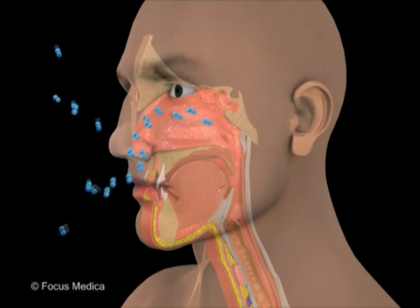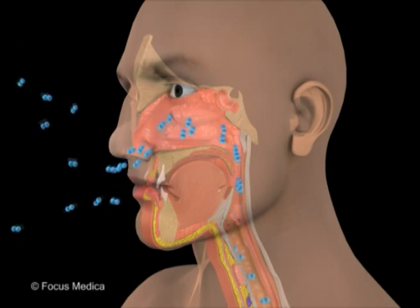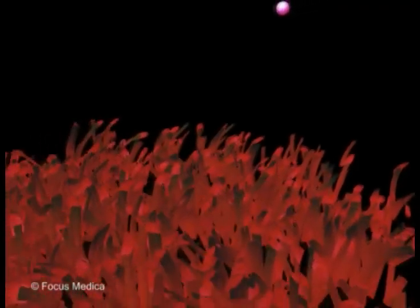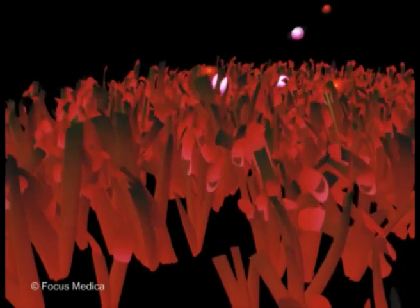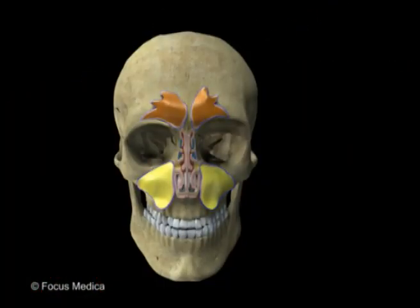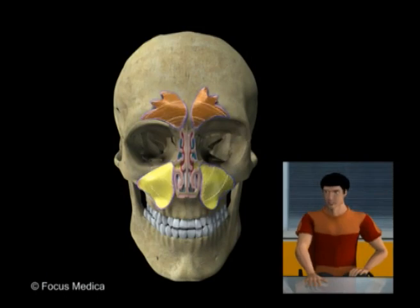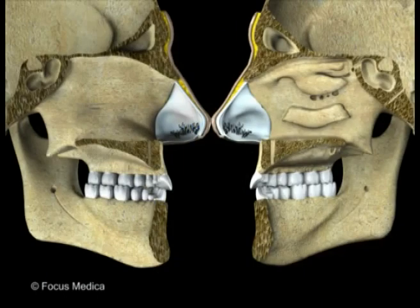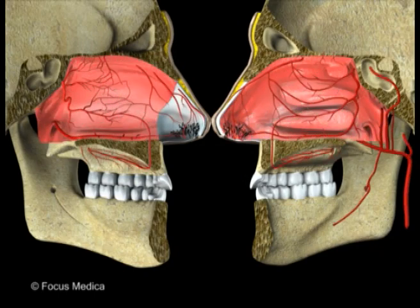The nasal cavity is the first portal of entry for air into the respiratory system. It is designed to warm up and also filter the incoming air to some extent. Together with the paranasal sinuses, it acts as a resonating chamber for the voice. Both sides are wrapped in a highly vascular respiratory mucous membrane, which is also called the mucoperiosteum.